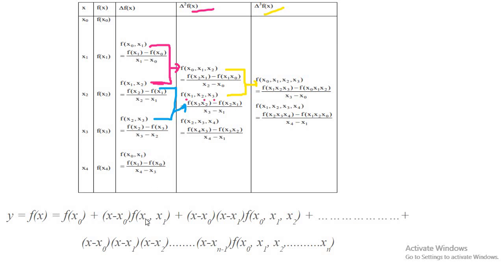The next term is (x minus x0)(x minus x1) with operator f(x0, x1, x2). We can obviously extend it for three, four terms, and for the nth one: (x minus x0)(x minus x1)(x minus x2) up to (x minus x_{n-1}), with coefficient f(x0, x1, x2, ..., xn).